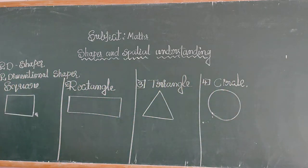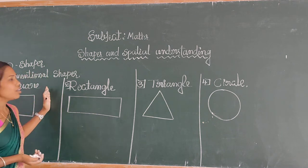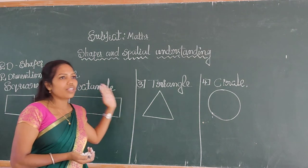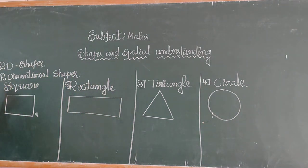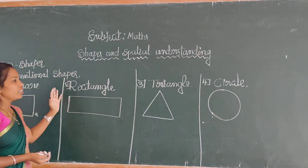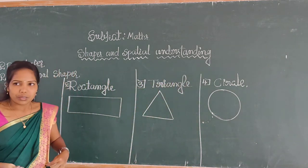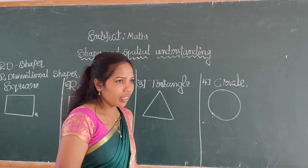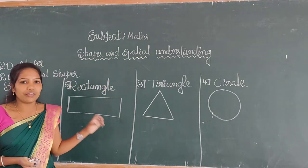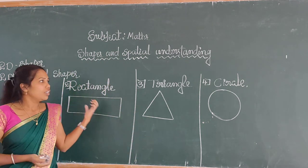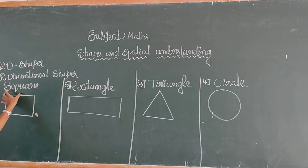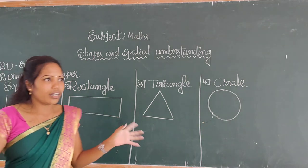Okay dear students, 2D shapes means two dimensional shapes, which are plane shapes or plane figures because they are flat. The shapes are: square, rectangle, triangle, and circle. Now we are going to learn the features of 2D shapes. Let's start with the first one, the square. What are the features of the square shape?